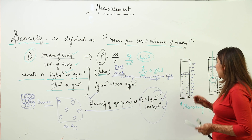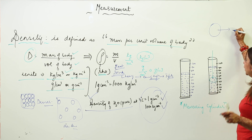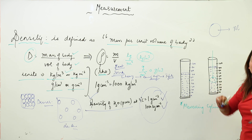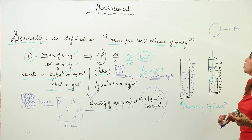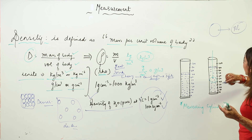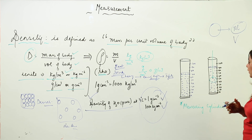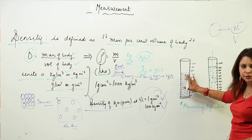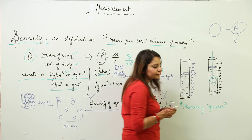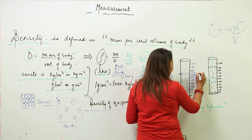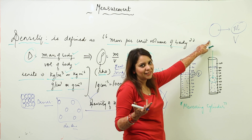To measure the density of a stone, first we take its mass using a physical balance — let's say its mass comes out to be M. We have already discussed this method, so suppose we have determined the mass as M. Next, to determine the volume V, we take a measuring cylinder that is partially filled with water, which has markings on it. The water level is initially at 70, indicating the initial volume.